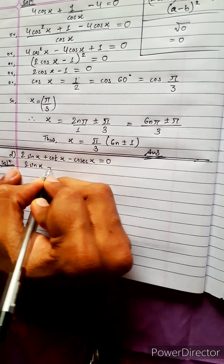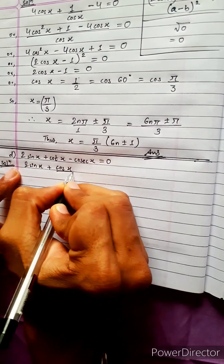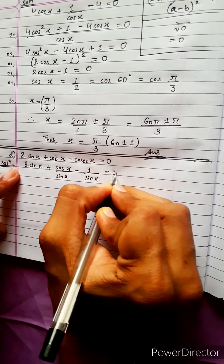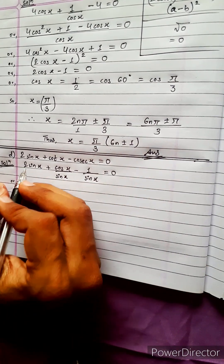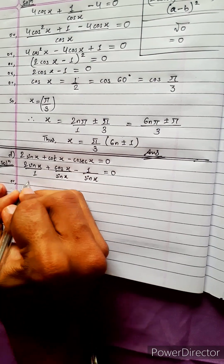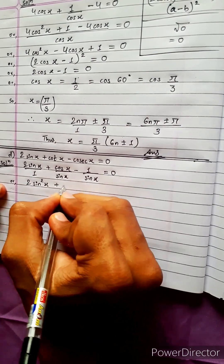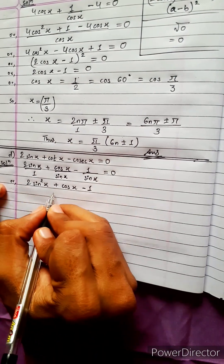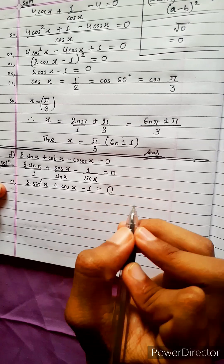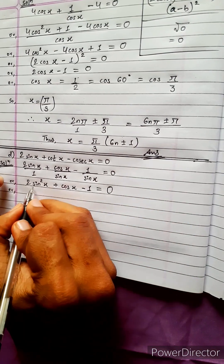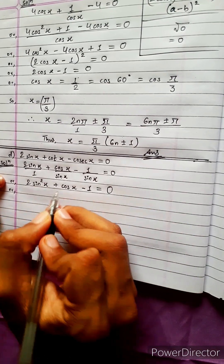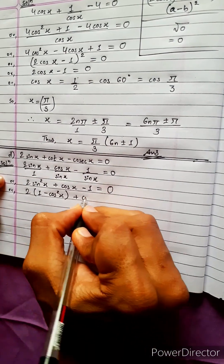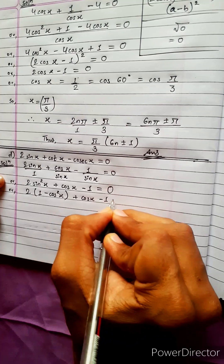Now for Problem D: 2sin x + cot x - csc x = 0. Rewriting cot x as cos x/sin x and csc x as 1/sin x, we take LCM sin x to get 2sin²x + cos x - 1 = 0.